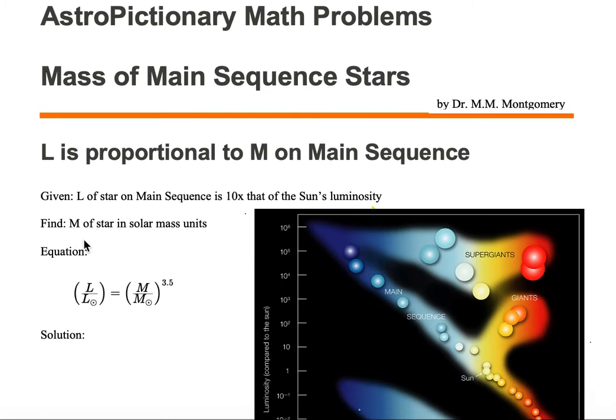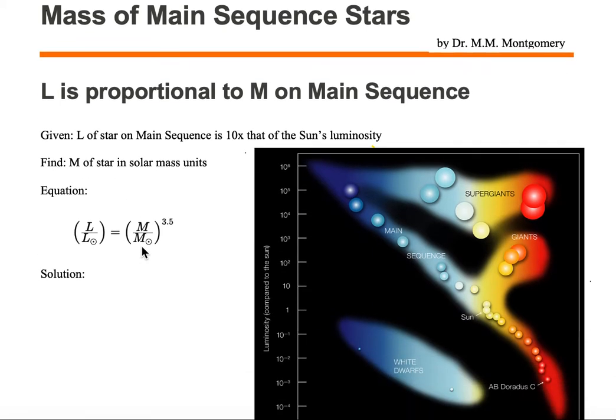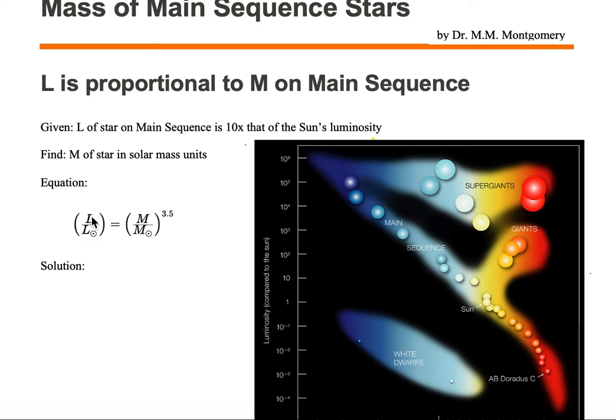We want to find the mass of the star in solar mass units. So here's our equation that we're given. The luminosity of the star relative to the luminosity of the sun, so that's parentheses L over L sun, close parentheses,